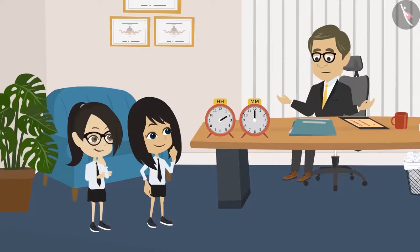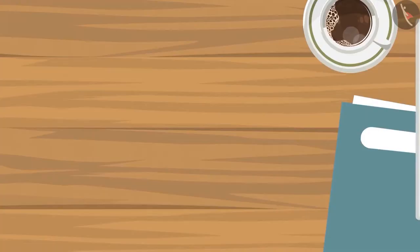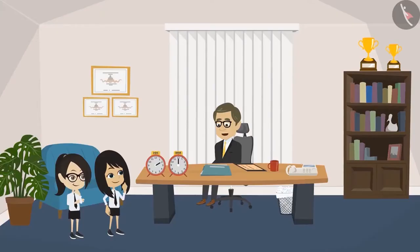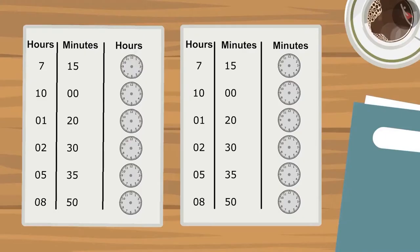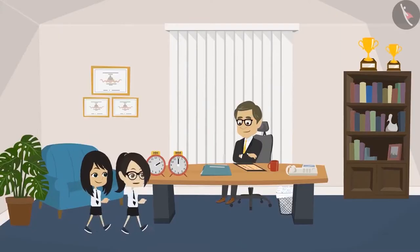Now you have learnt to read the hour hand and the minute hand separately. Now I will give you one sheet each. Draw the time given in the timetable I gave you in the clocks made on the sheet. When you will fill and bring it to me, then we will learn to write both hands together. Okay, sir. Now we will go.